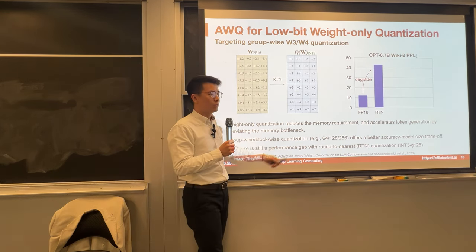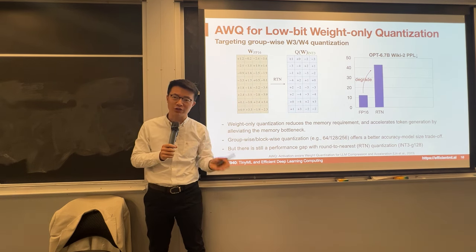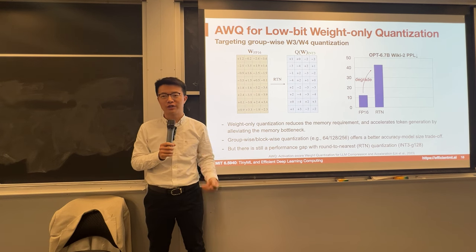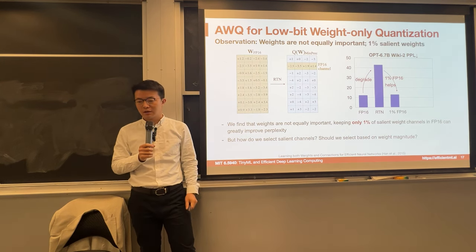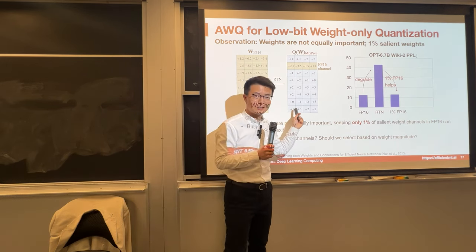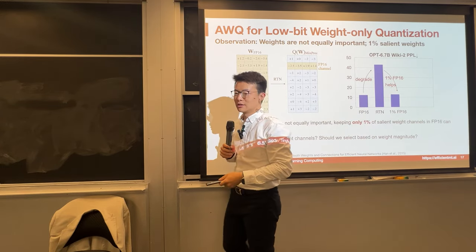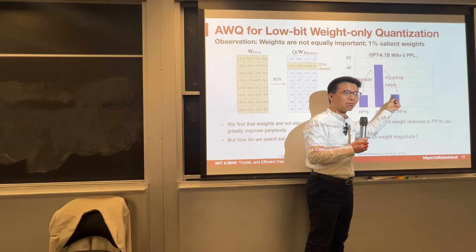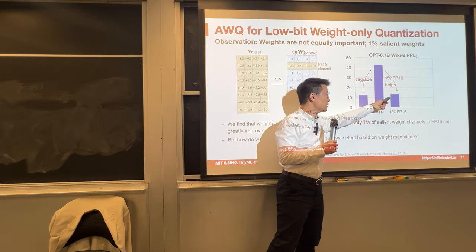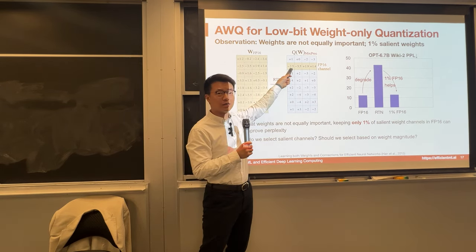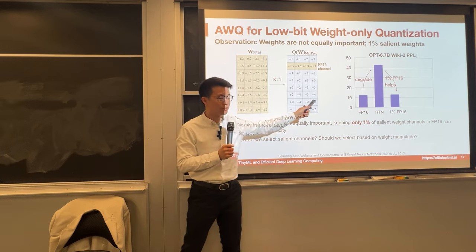Even using group-wise quantization, where every 128 numbers are quantized together with a shared scaling factor, there is still degradation. Interestingly, we find not all weights are equally important. Just by keeping 1% of the rows in FP16, it immediately brings back the perplexity to the original value — only one channel kept unquantized recovers the quality.